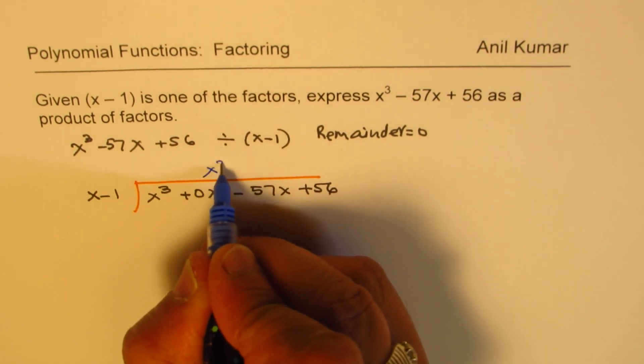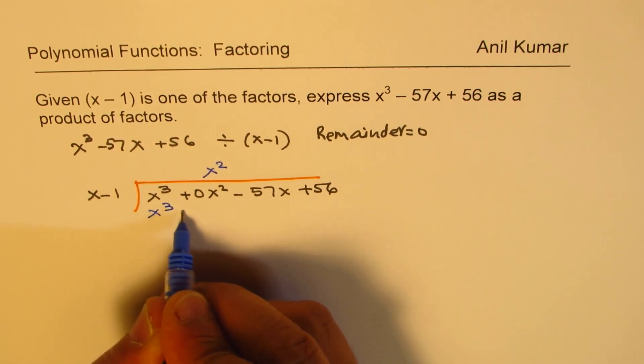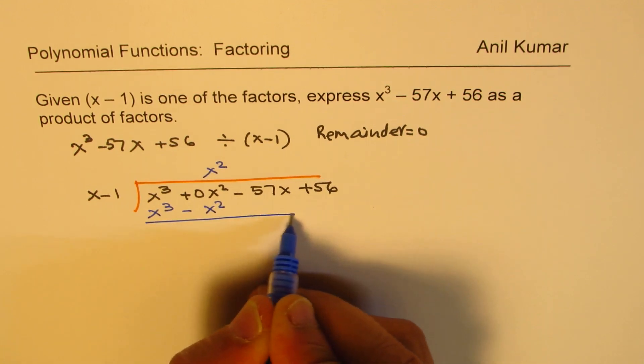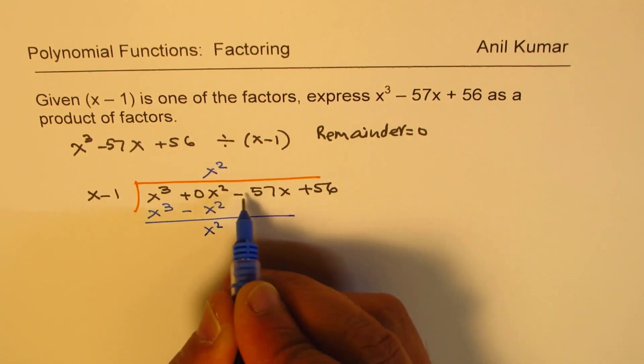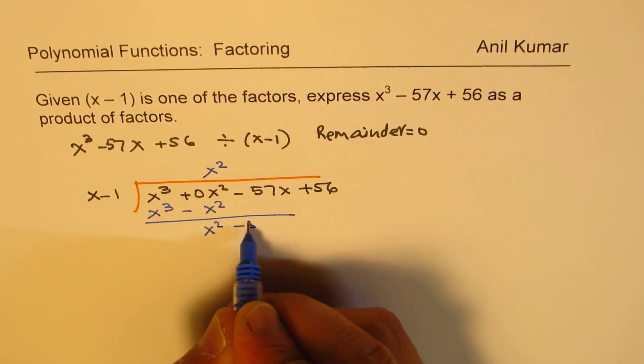So now we have to multiply by x squared. So we get x cubed minus x squared. And there you get x squared when you take away. Bring down 57x.